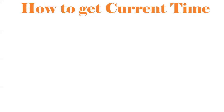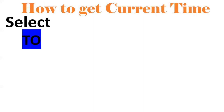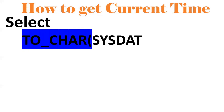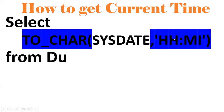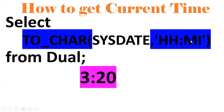Next, how to get the current time — I want only hours and minutes. We use TO_CHAR functionality: SELECT TO_CHAR(SYSDATE, 'HH:MI') FROM DUAL. Since I am recording the session at around 3:20, it will give 3:20 as the current time.